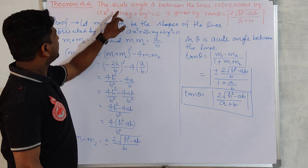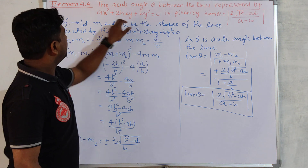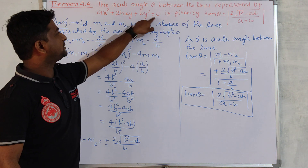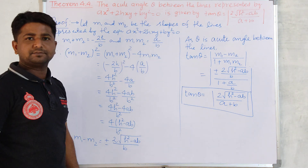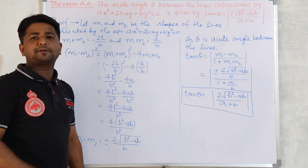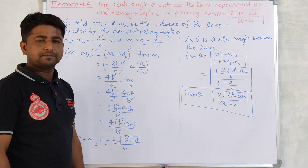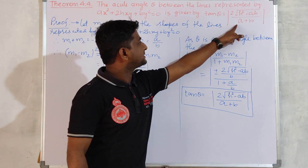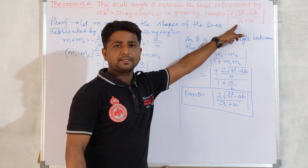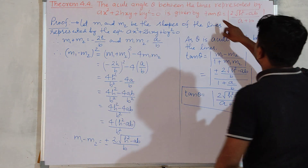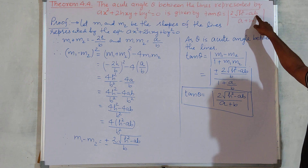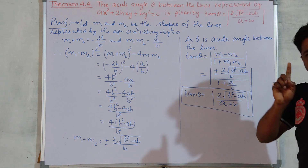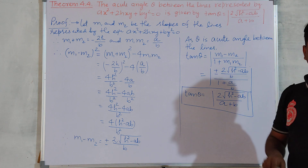Here we will focus on finding the acute angle theta between the lines represented by ax² + 2hxy + by² = 0, which is a homogeneous equation representing a pair of straight lines passing through the origin. The formula is tan θ = mod of 2√(h²−ab) upon (a+b), and this is the acute angle formula between the two lines.